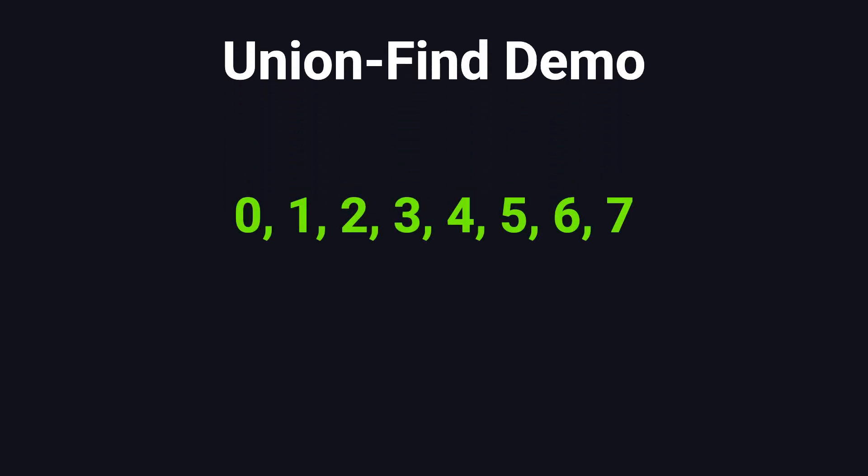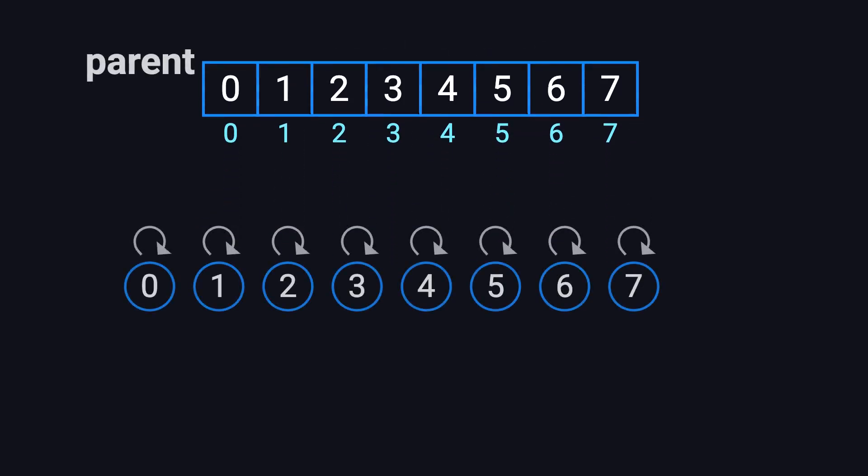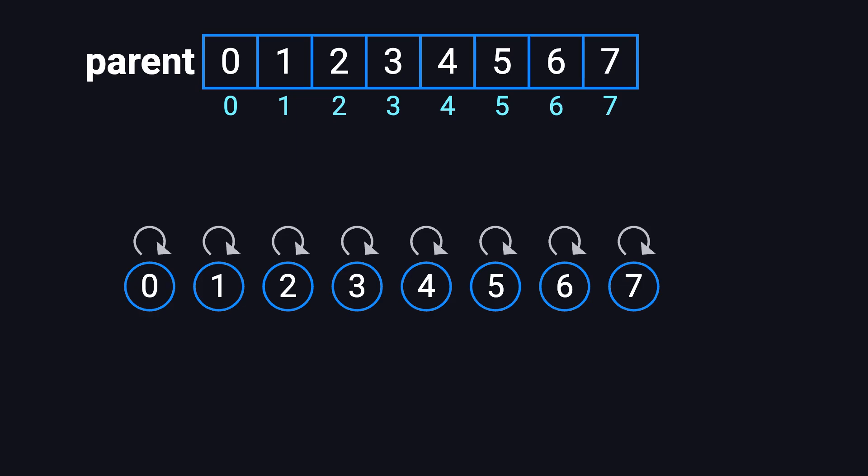Sounds a bit abstract? No worries! Let's walk through a concrete example step by step, using both tree diagrams and arrays to see exactly how the basic operations work. We'll start with eight elements, numbered from 0 to 7, and watch how the Union-Find structure builds and evolves. First, we perform the MakeSet operation. We initialize the eight elements, placing each one into its own individual group. At this point, every element is its own root, meaning each element's parent is itself. You can picture this as eight small trees, each with just a single node.